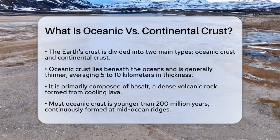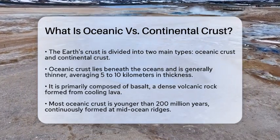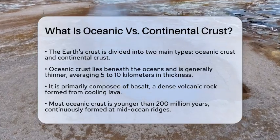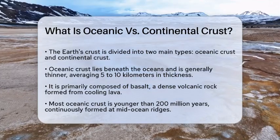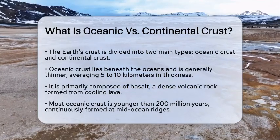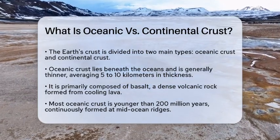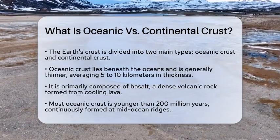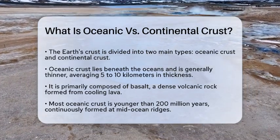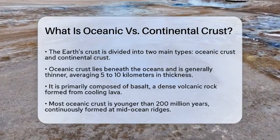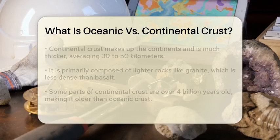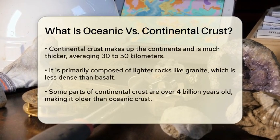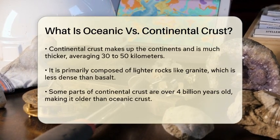Oceanic Crust is the layer of the Earth's crust that lies beneath the oceans. It is generally thinner than Continental Crust, averaging about 5 to 10 kilometers in thickness. This crust is primarily composed of basalt, a dense volcanic rock that forms from the cooling of molten lava.